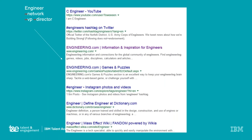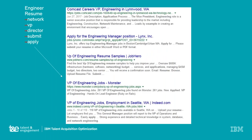For example: 'engineer NOT network NOT VP NOT director' brings back mostly what we're looking for. But when we expand to 'engineer AND resume NOT network NOT VP NOT director NOT submit NOT apply,' false positives still show up — the VP is coming through, and job boards like Indeed and Monster appear because they use 'submit your resume.' This is a good starting point, but we need to build upon it and refine it.